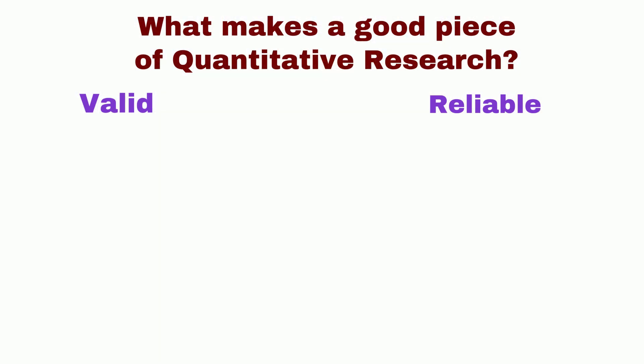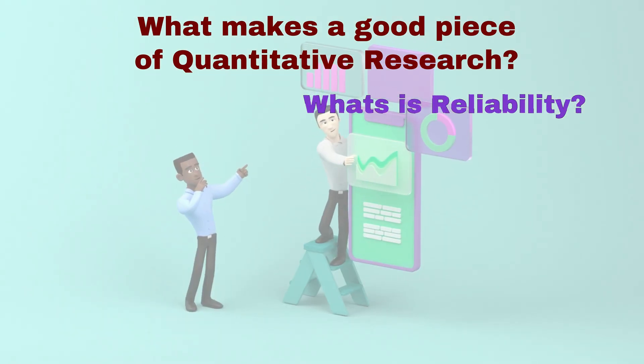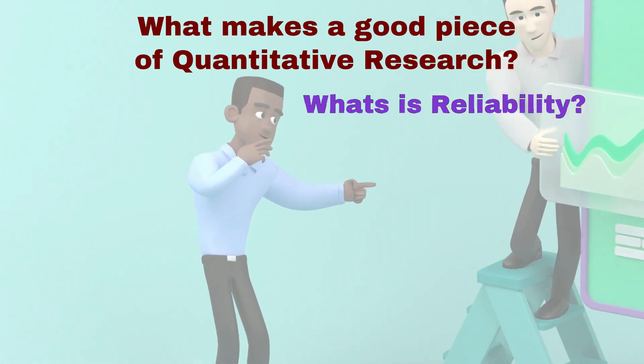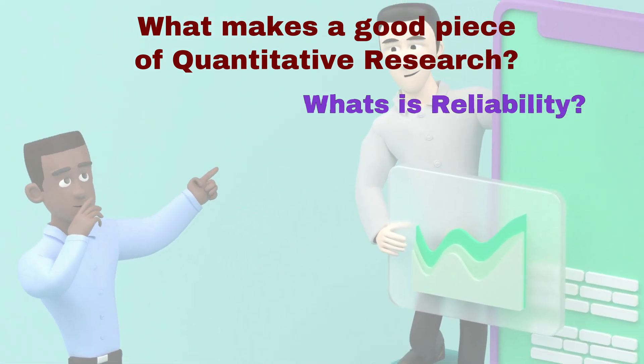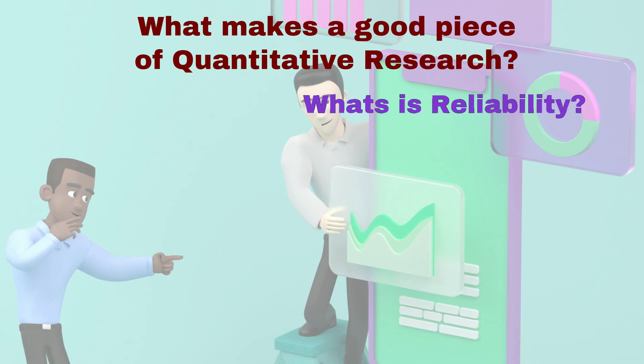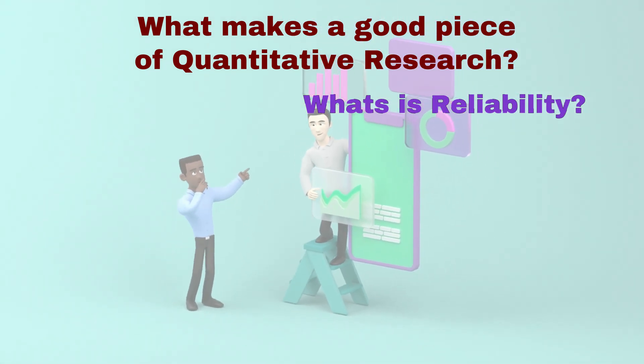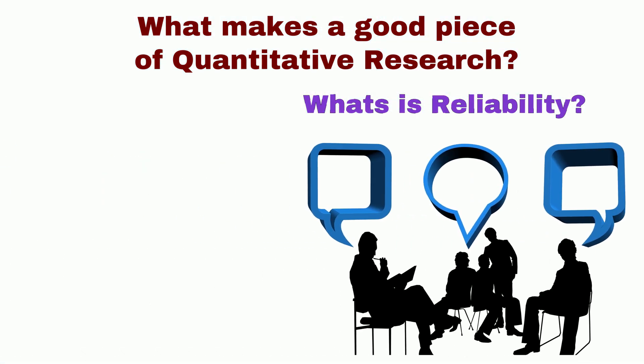First quality measure of quantitative research is reliability. It refers to producing same results when same measures are administered by different researchers in different times on different population groups. It is important because quantitative researchers are interested in generalizations.